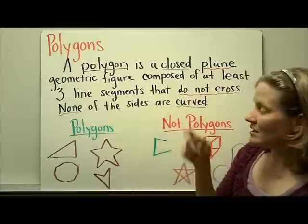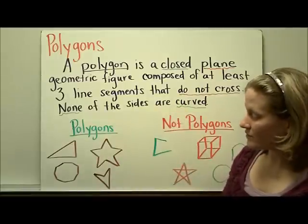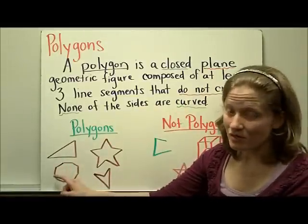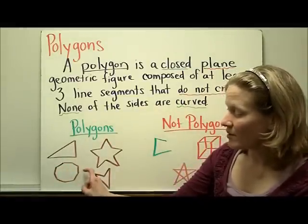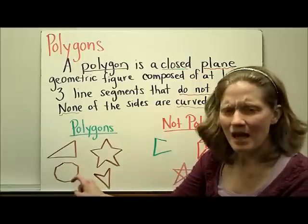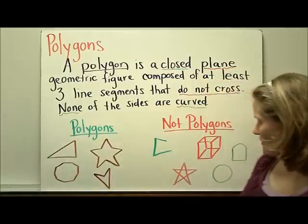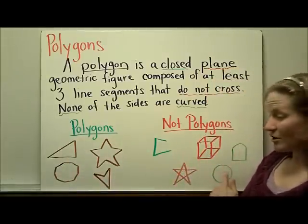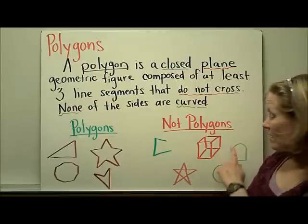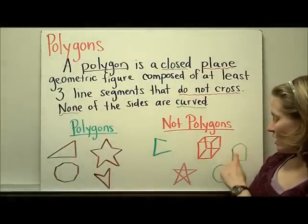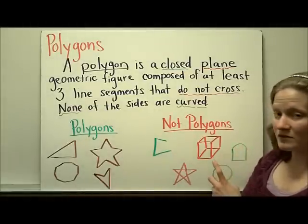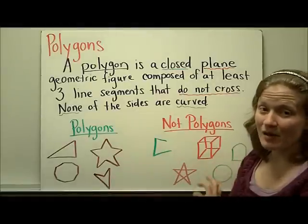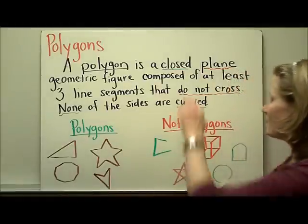Additionally, none of the sides are curved. So this, for example, almost looks like a circle, but if you look closely, it's drawn up of nine straight sides. Over here, these two shapes — this one is completely curved, this circle, and this one has straight sides and one curved side. Neither of these are polygons because polygons can't have curved lines.